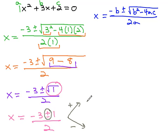Negative 3 plus 1 is negative 2, over 2, which reduces to just negative 1. And negative 3 minus 1 is negative 4, over 2, which equals negative 2.